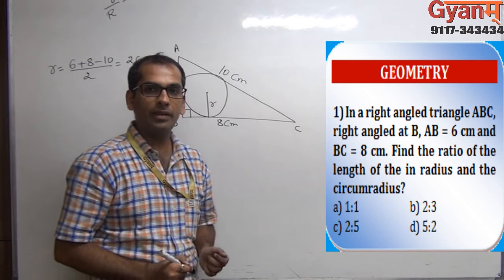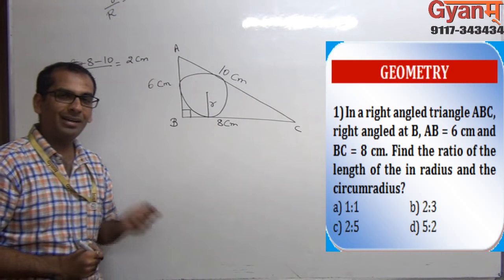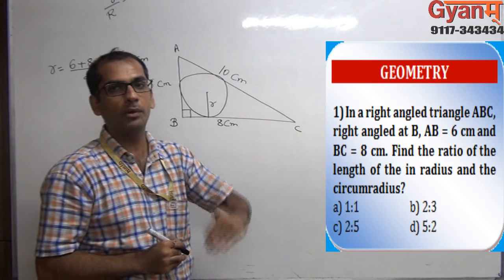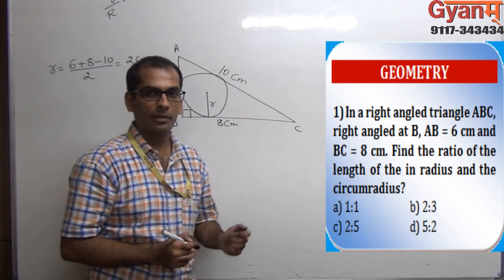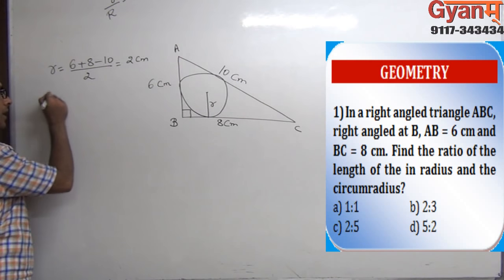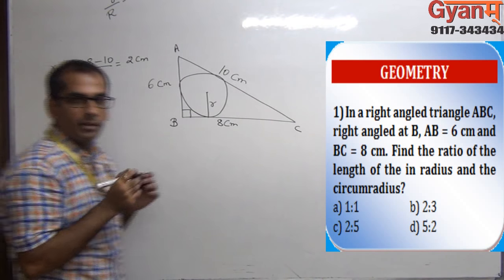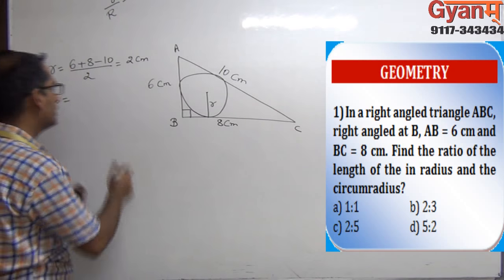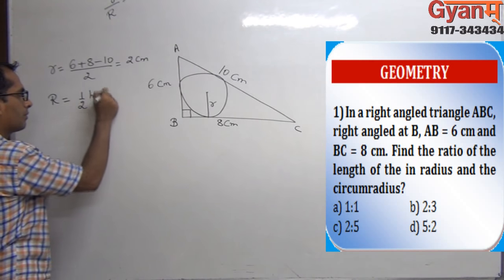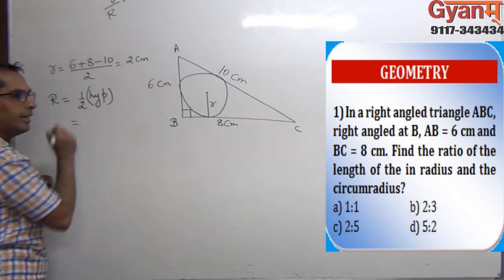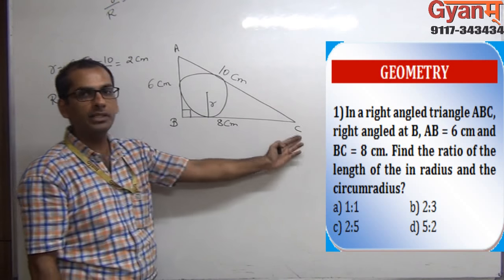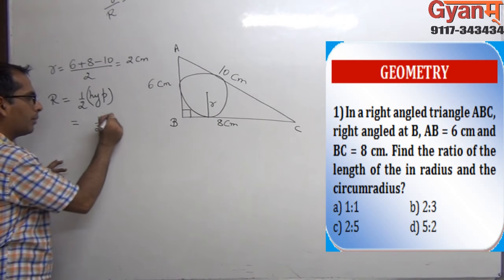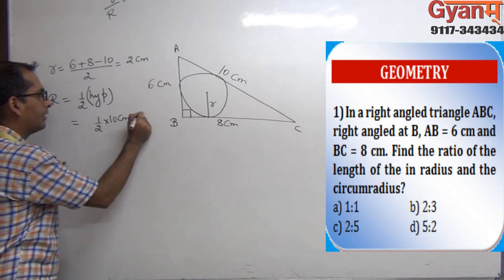For capital R, the circumradius, we should know that it is always equal to half of the hypotenuse. In this case the hypotenuse is 10 centimeters, so capital R is equal to half of 10 centimeters, which is 5 centimeters.